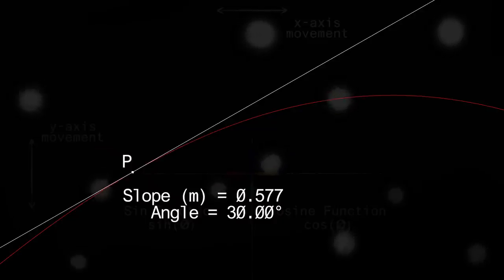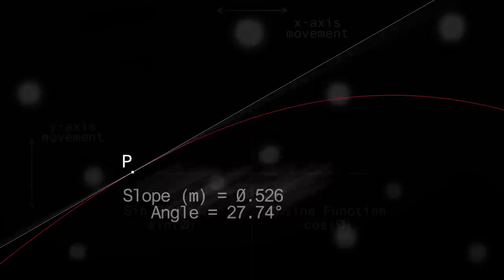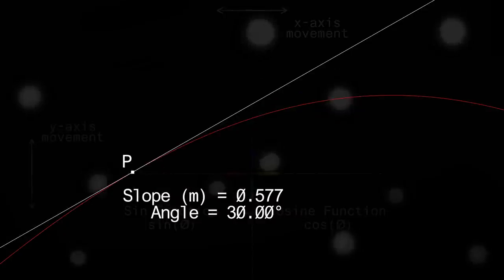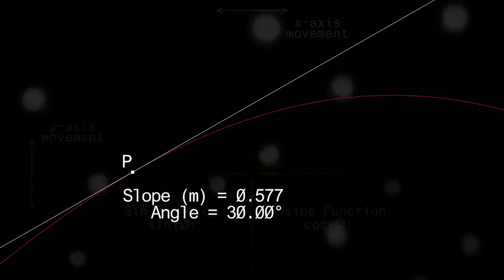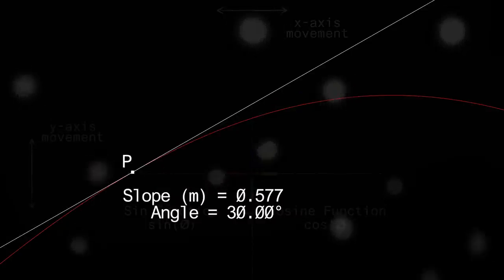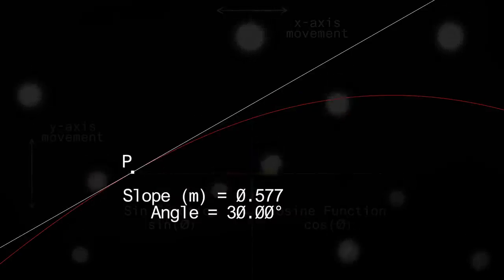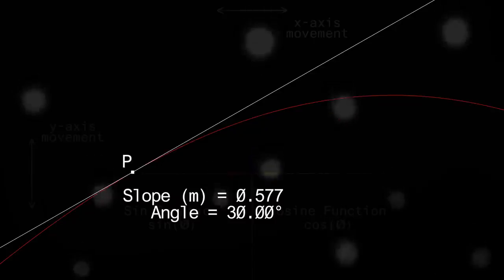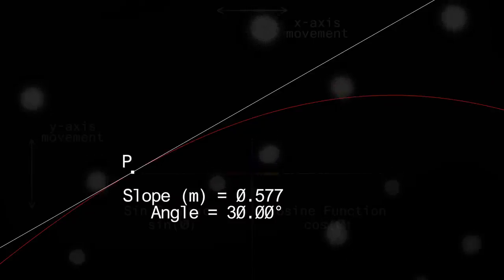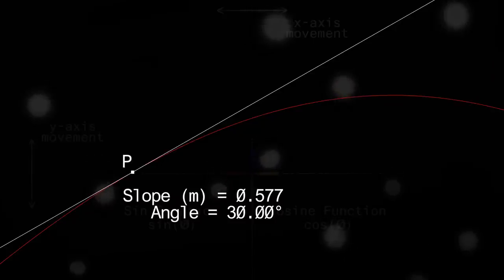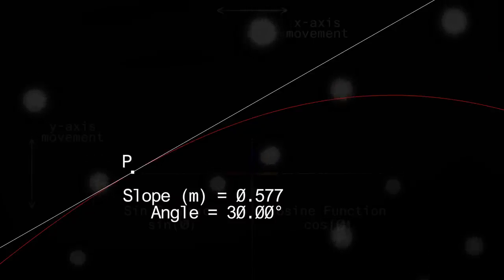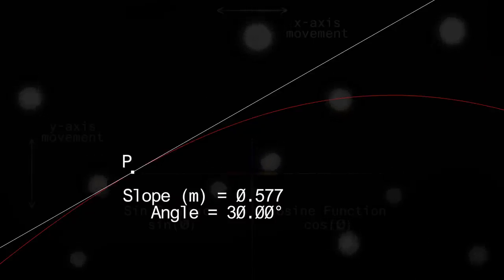Note that our initial approximation of the slope at point P was 21.15 degrees, and our final exact value for the slope was 30 degrees. It makes a huge difference to use two points that are infinitely close together, or effectively the same point, which has a distance of 0 from itself.